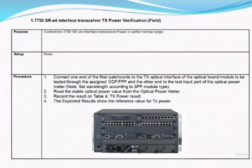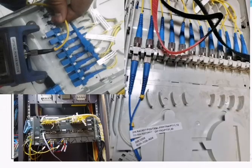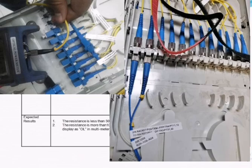The next one is the TX power verification test, which is used to check the patch codes for transmit and receive terminals of the SFP. For SFP, we directly check the power of the SFP through an optical power meter and check the expected result. If our power is within the threshold, then our SFP is fine, our patch code is fine, and the system is giving good results.